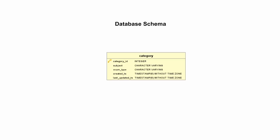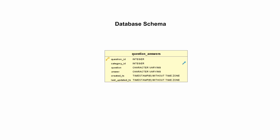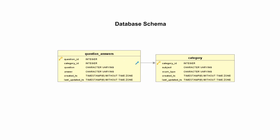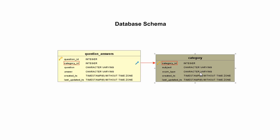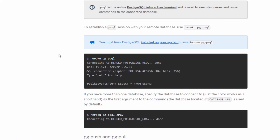We have provisioned a database from Heroku. In this database we are going to have a category table with category ID, subject, and exam type, and a question-answers table with question ID, category ID, question, and answers columns. These two tables are connected by a foreign key constraint on the category ID.